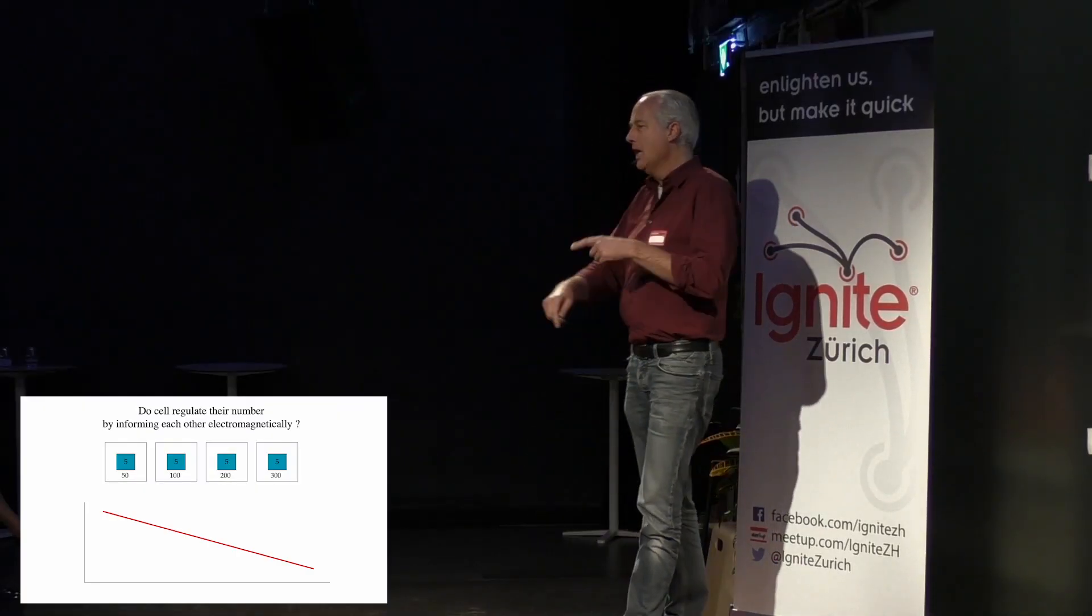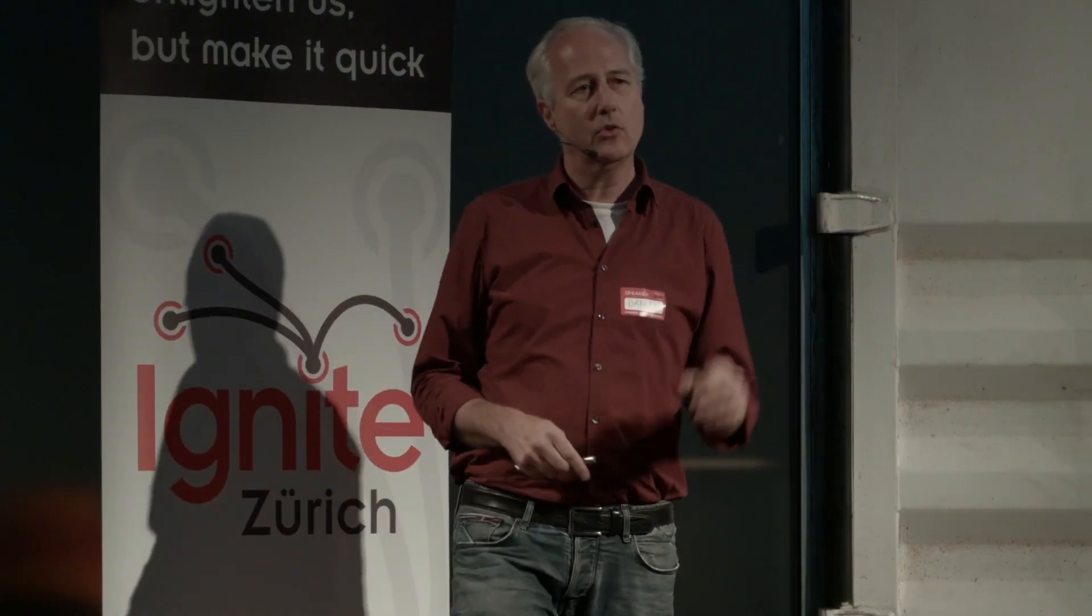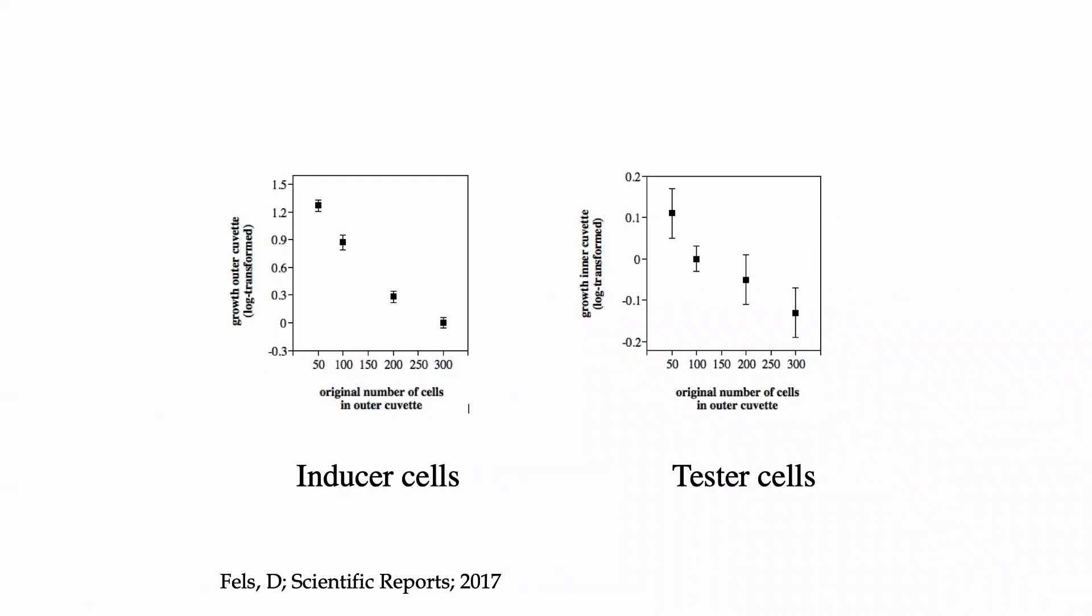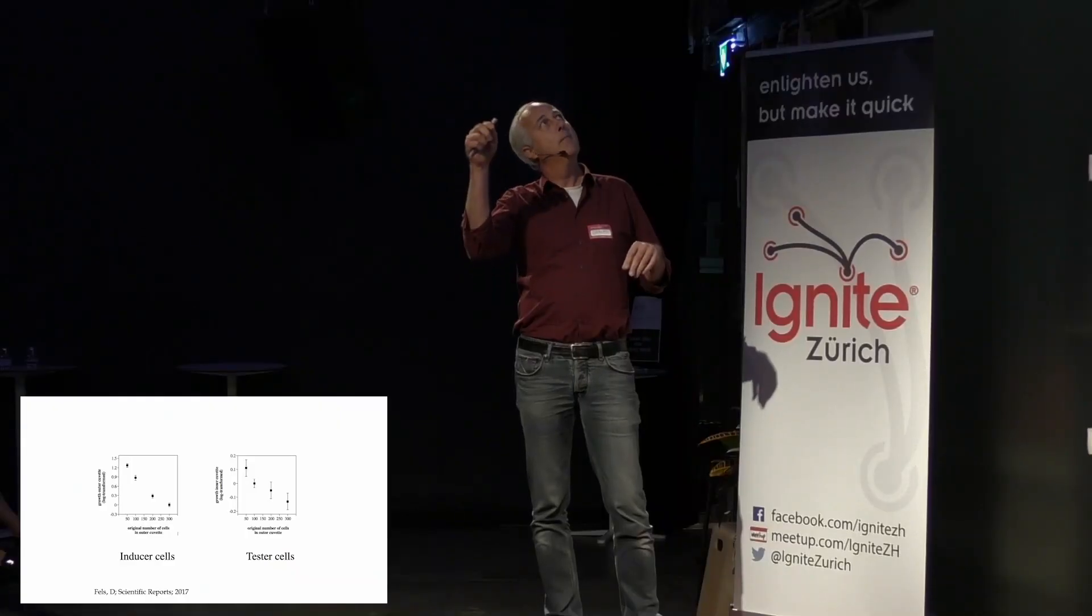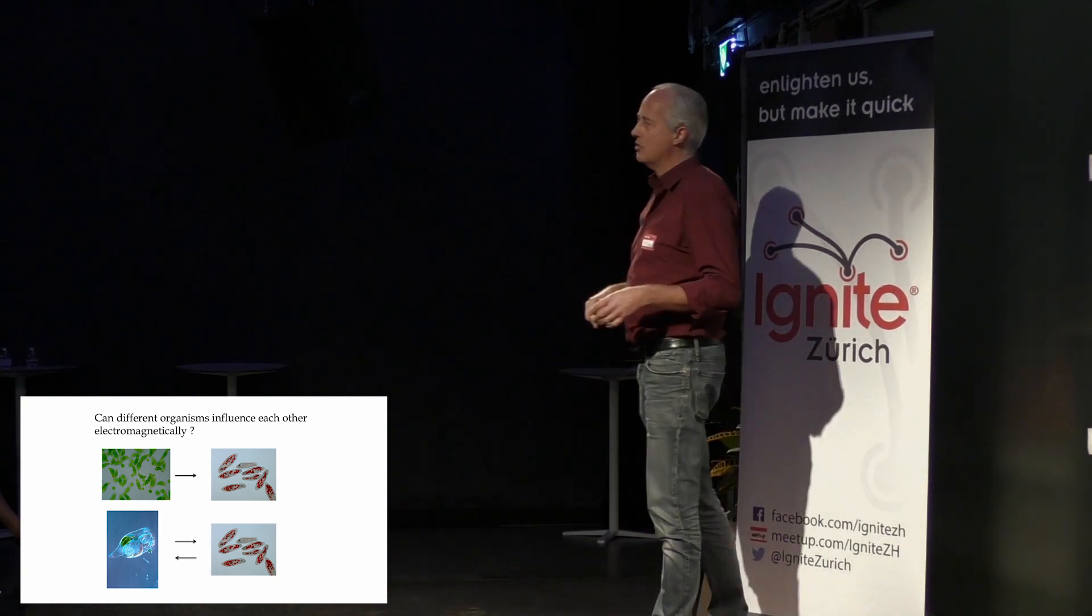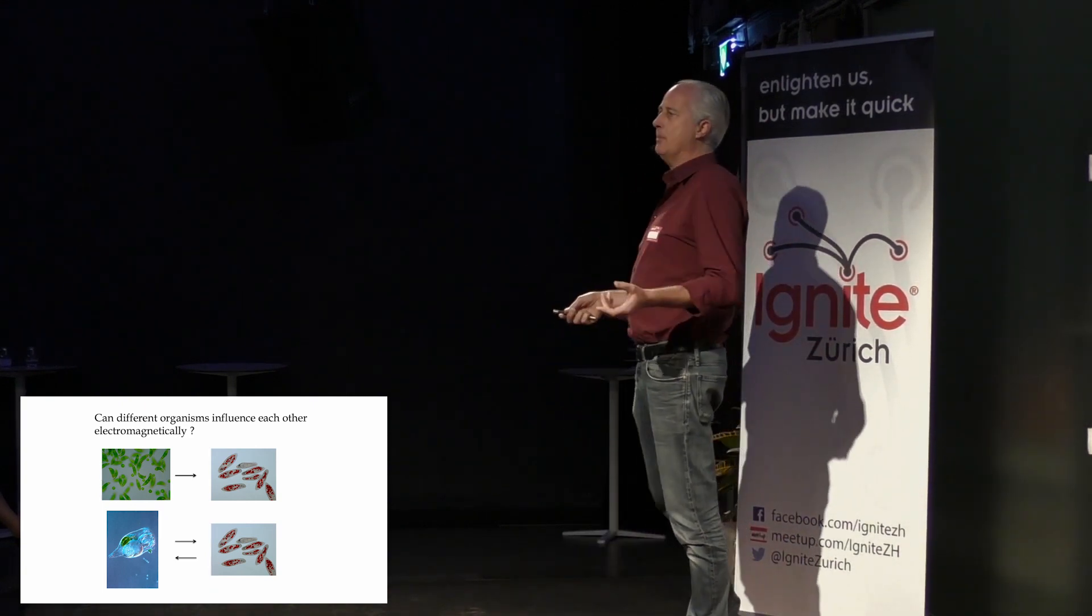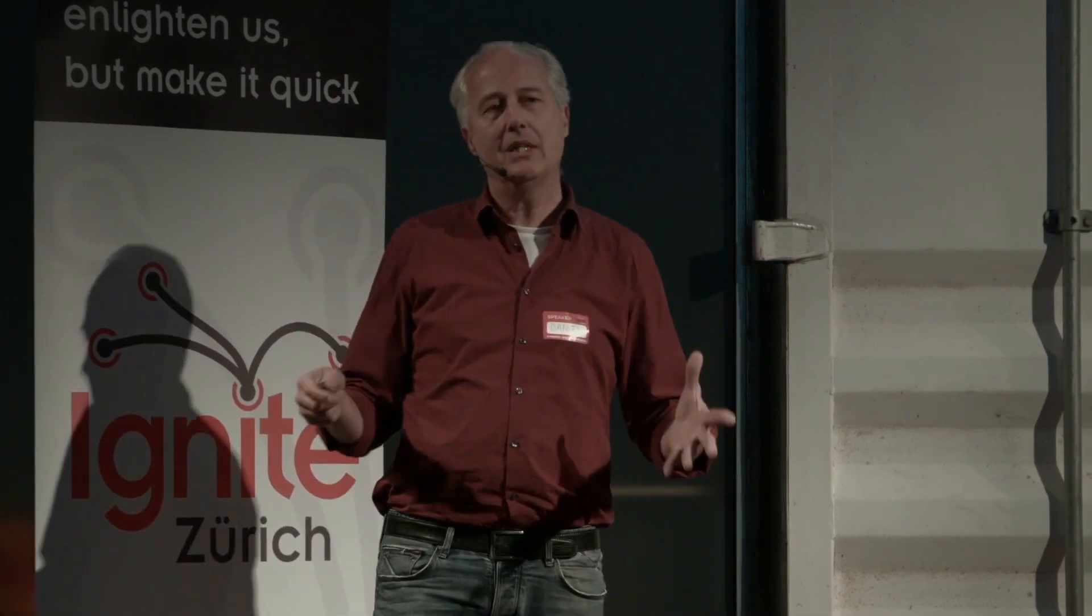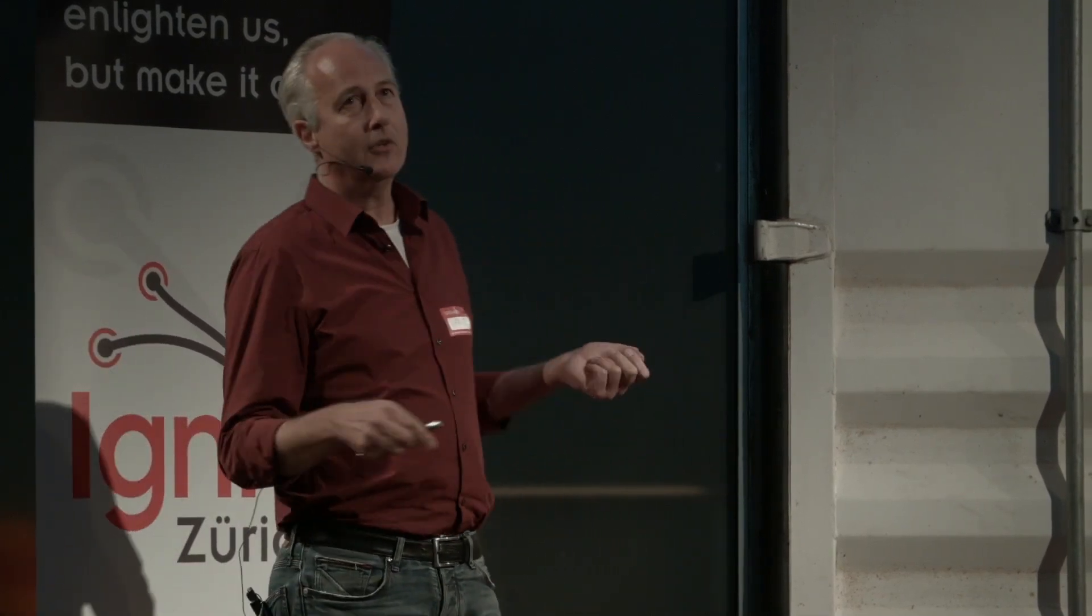What has that to do with us? If your cells are not regulated in density, we all would look monstrous. So, there is a regulation. The question is whether it's electromagnetic. And these findings were telling me that the tester cells followed actually the inducer cells which was the indication that there is an electromagnetic system talking and working between cells and most probably in our bodies.